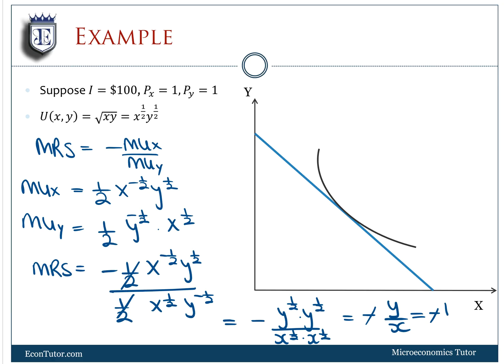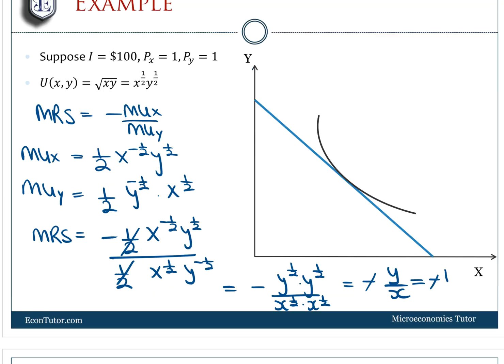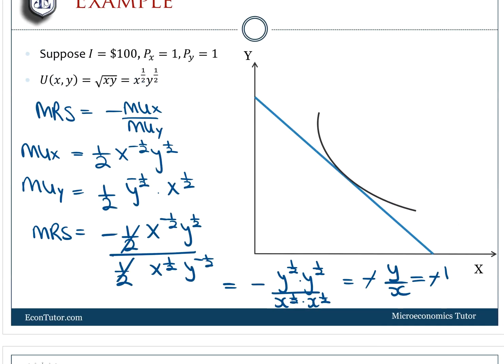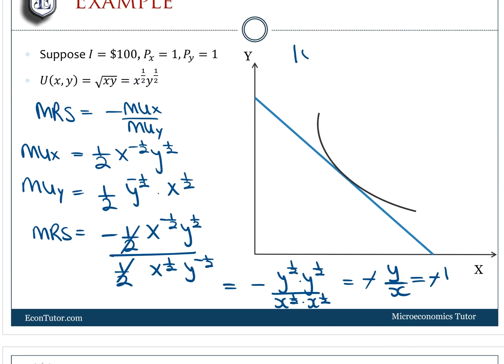If Y is equal to X, I plug this back in the budget constraint, which is 100 equals price of X times X plus price of Y times Y. But X and Y are equal in this case, so this becomes 100 equals X plus X, and that's 2X equals 100.